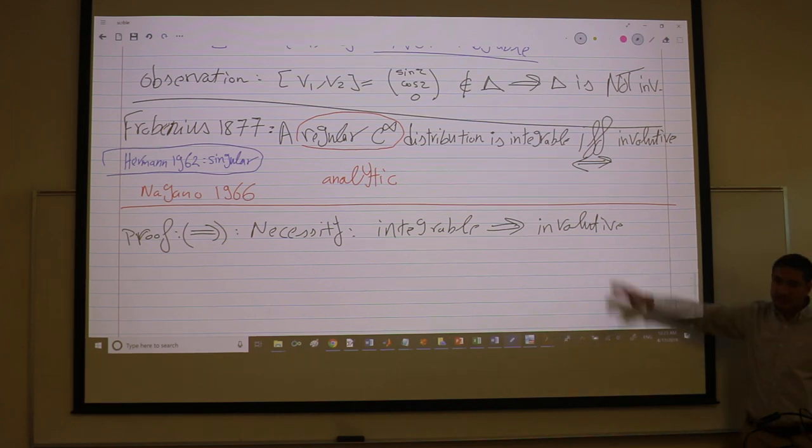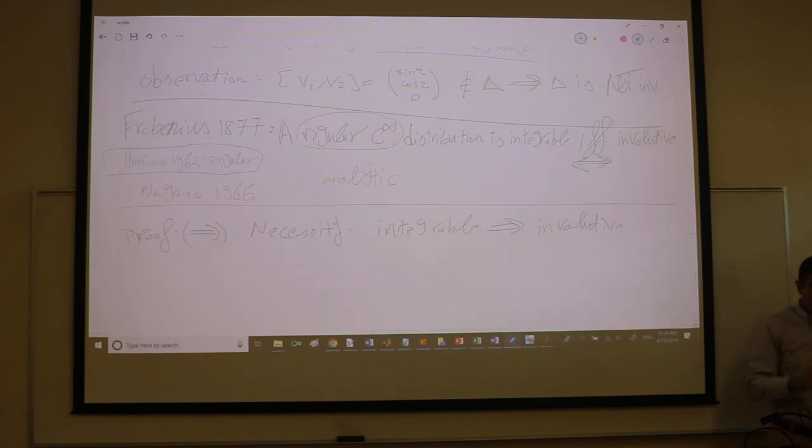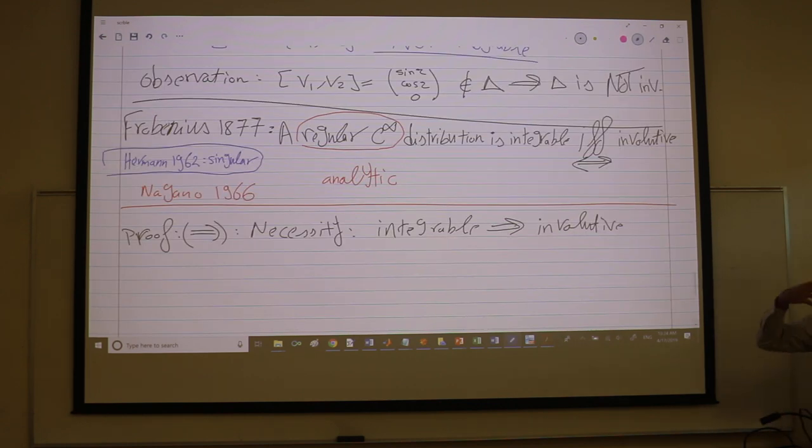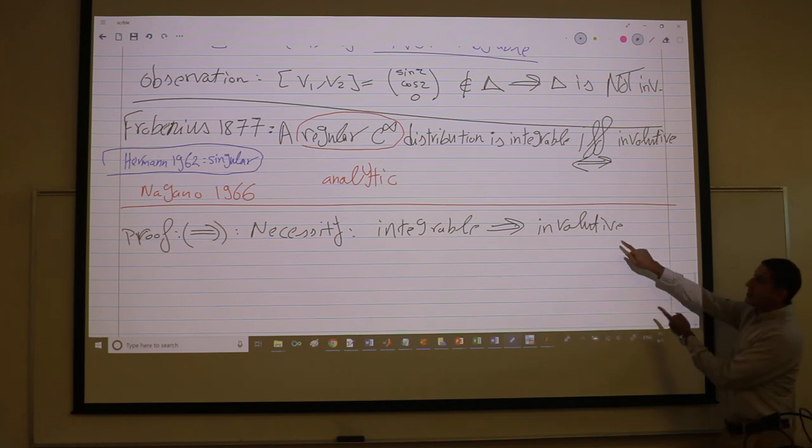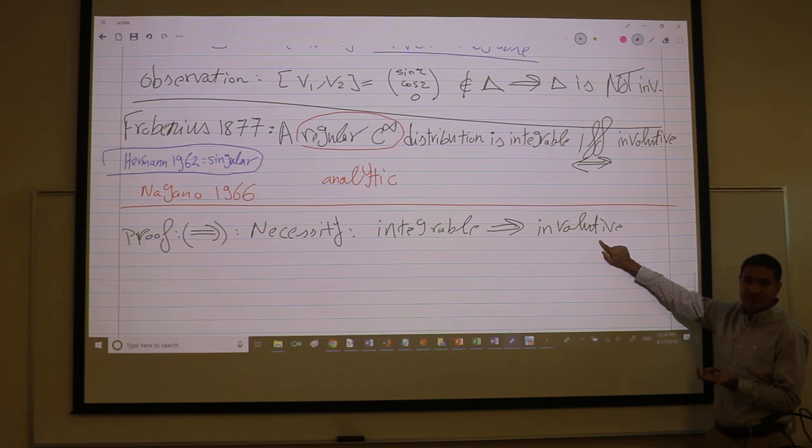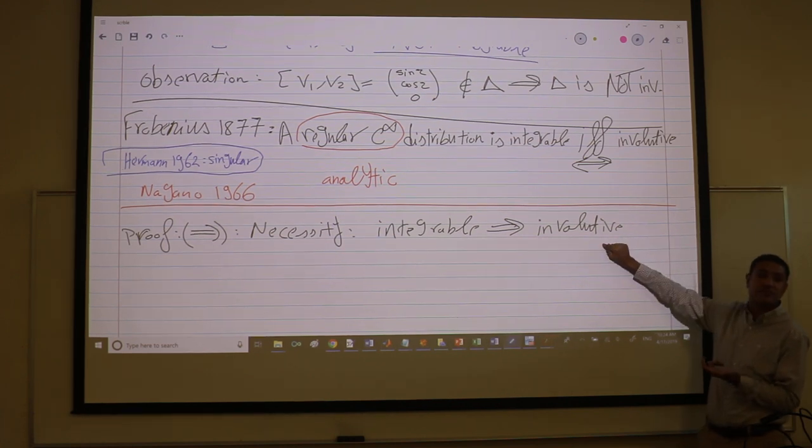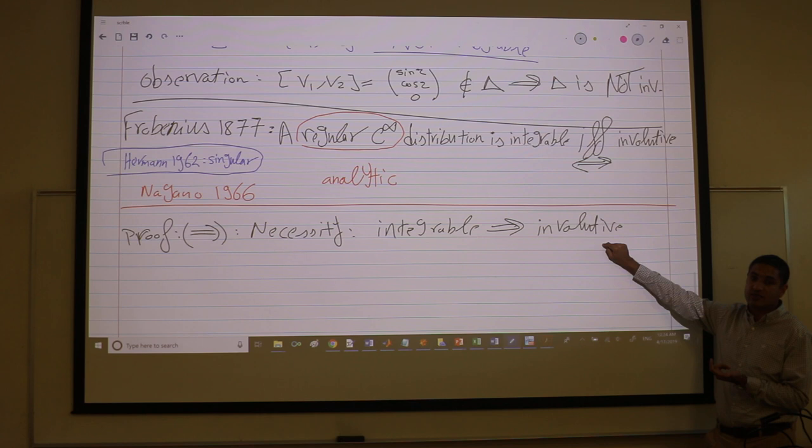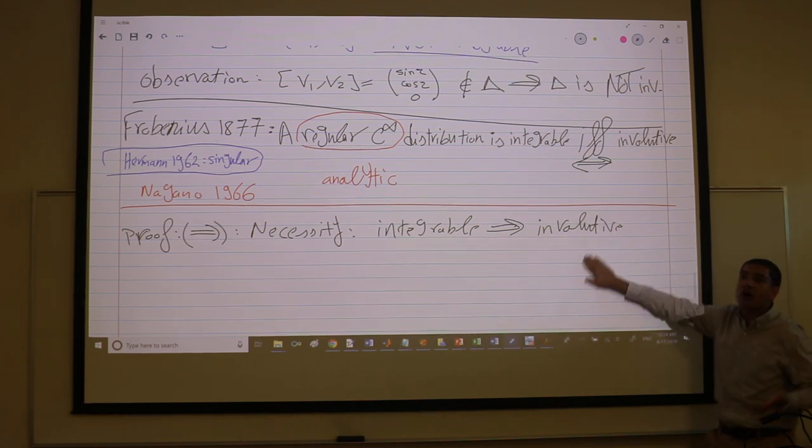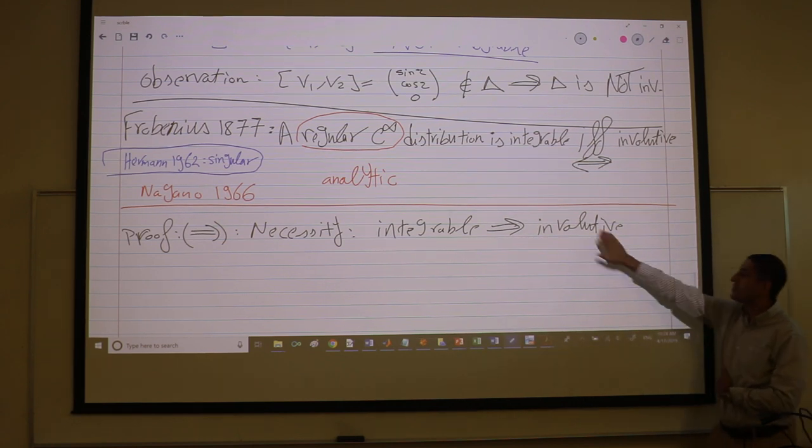Involutive is a necessary condition and you can think of it why. We already know that Lee brackets generates velocities. And when generating velocities it may generate new velocities. So if the distribution is involutive means what? It means that the Lee brackets are not new. The Lee brackets are in the distribution. So the Lee brackets cannot generate new velocities.